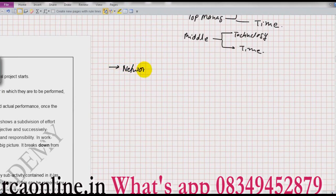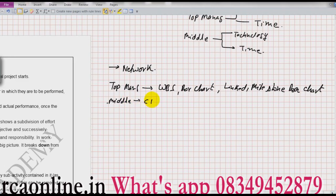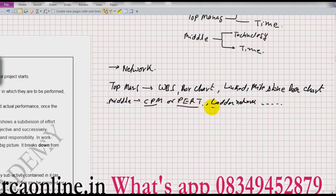To execute a project we need a mathematical model, and that mathematical model is known as a network. Since the project is different for different people, this network will also be different. For middle management, this network can be WBS — work breakdown structure — bar chart, linked or milestone bar chart. For middle management it can be CPM or PERT, which is in your course. There are other networks also, like ladder network.